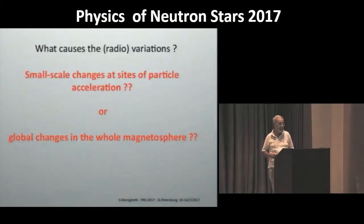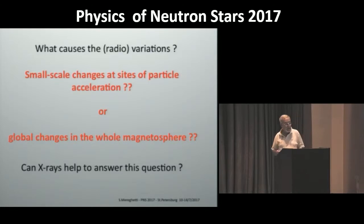So there is a lot of variety of variability in rotational power pulsars seen in the radio band. And a question that we are trying to ask is the following. Are these changes something that is related to something minor that occurs just at the sites of particle acceleration? After all, in the radio band, we know that only a small fraction of the available spin-down power is emitted. Or are these changes related to something more global that involves the whole magnetosphere? Maybe now we are at the point in which X-ray observation can start to tell something relevant in this respect.